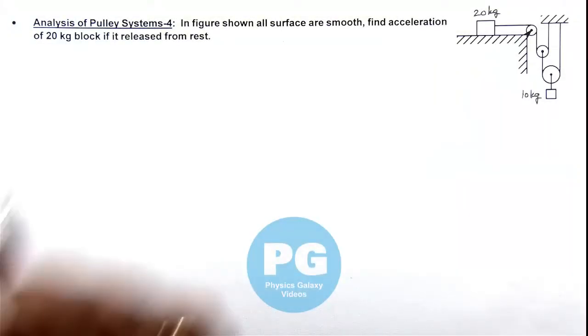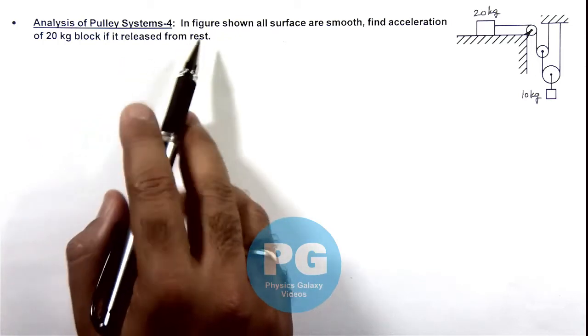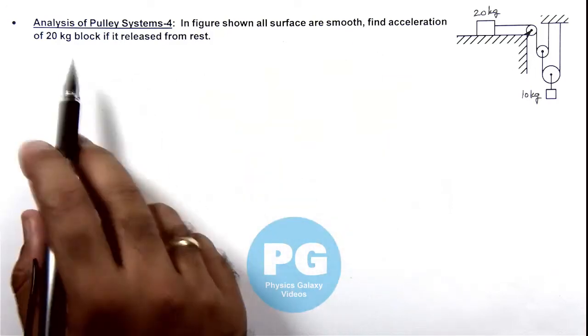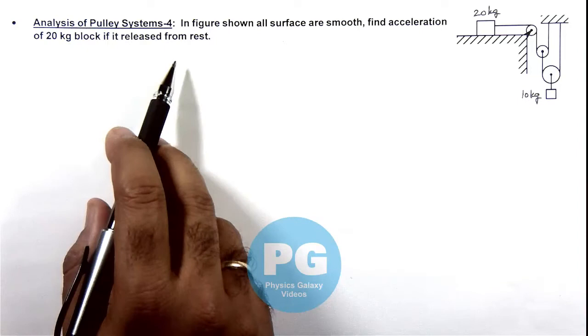In this illustration we'll analyze another pulley system. The figure shows all surfaces are smooth and we are required to find the acceleration of 20 kg block if it is released from rest.